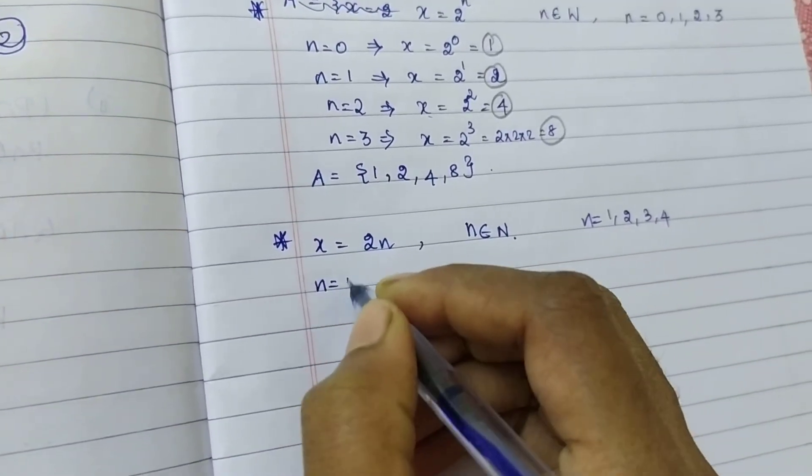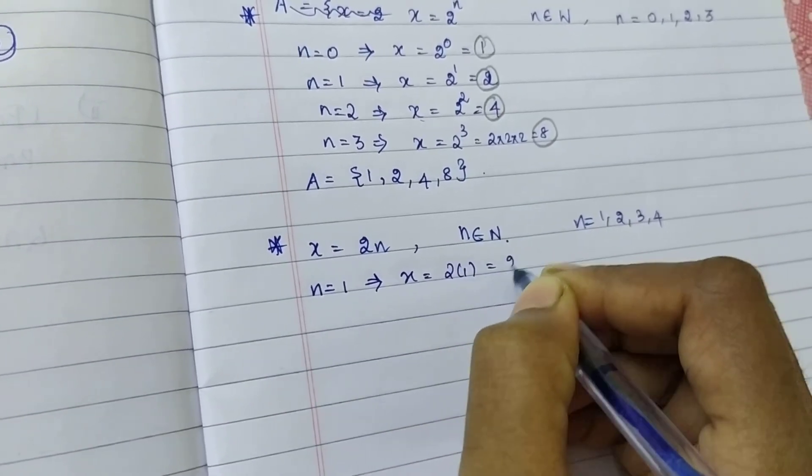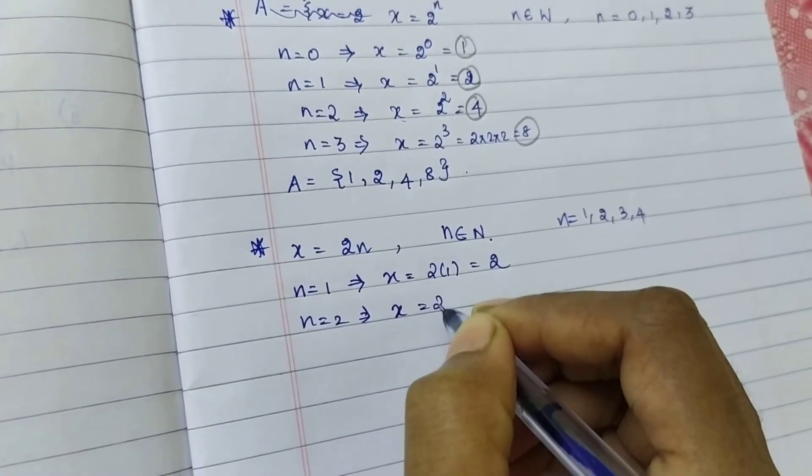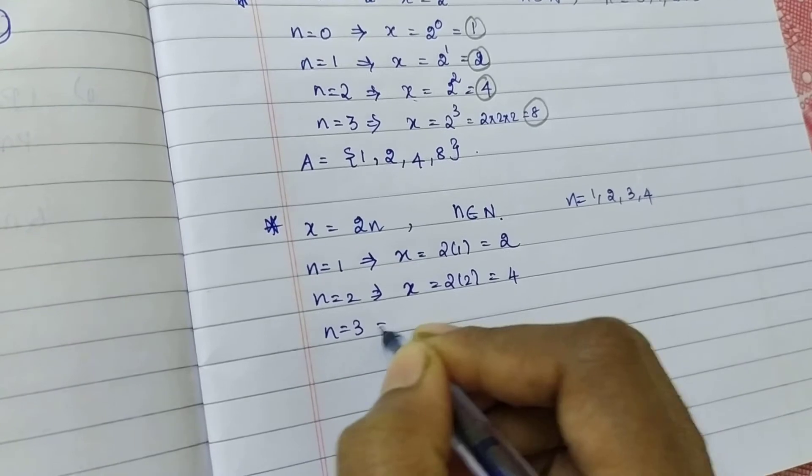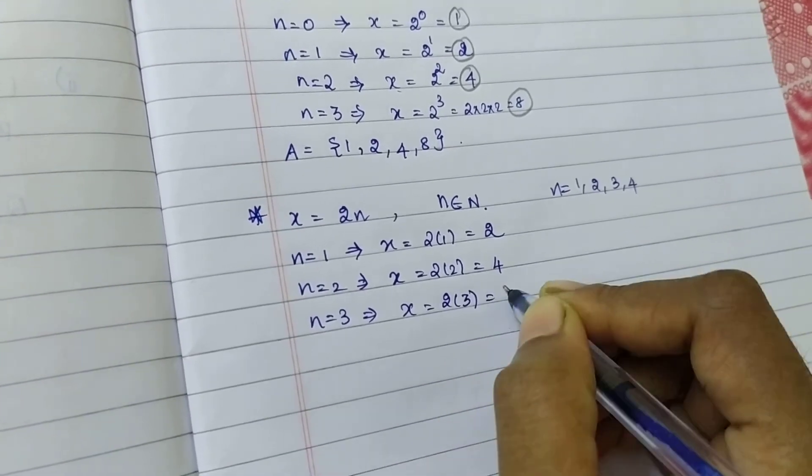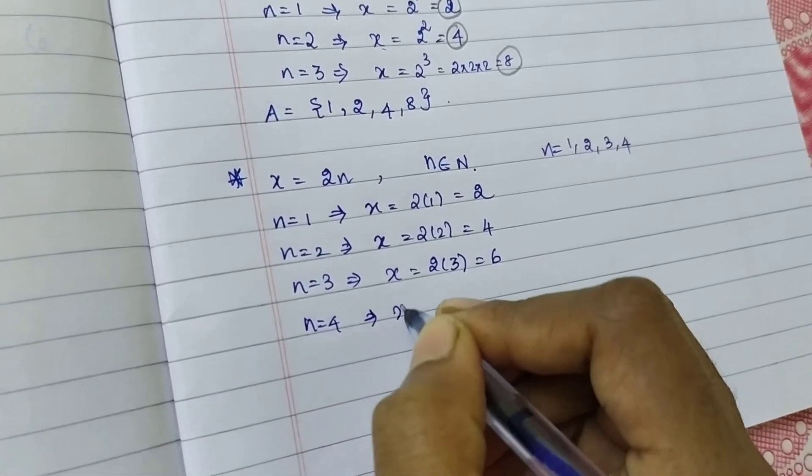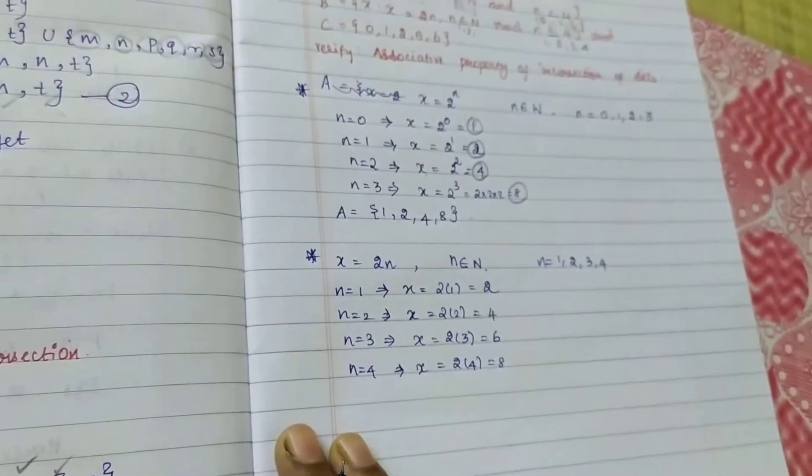Put my N equal to 1. So, X equal to 2 into 1 equal to 2. Put my N equal to 2. X equal to 2 into 2 equal to 4. Put my N equal to 3. X equal to 2 into 3 equal to 6. N equal to 4. X equal to 2 into 4 equal to 8.